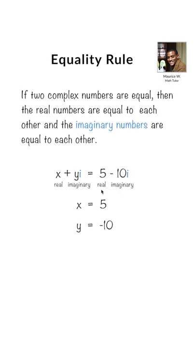Equality rule. If two complex numbers are equal, then the real numbers are equal to each other, and the imaginary numbers are equal to each other.